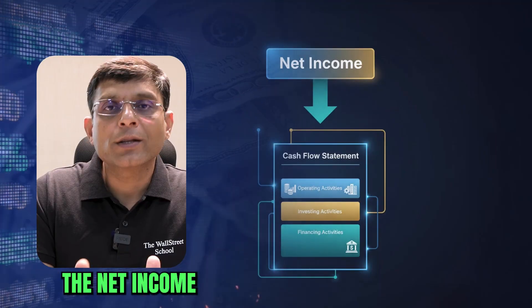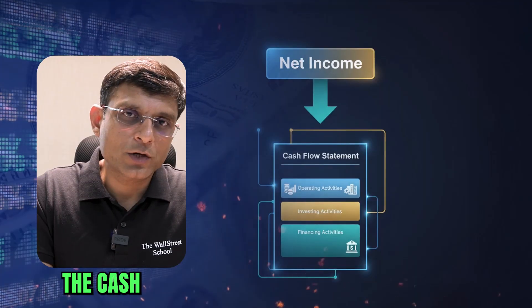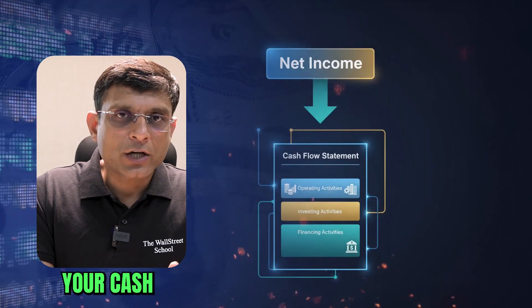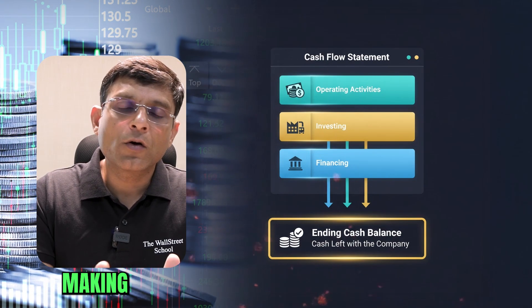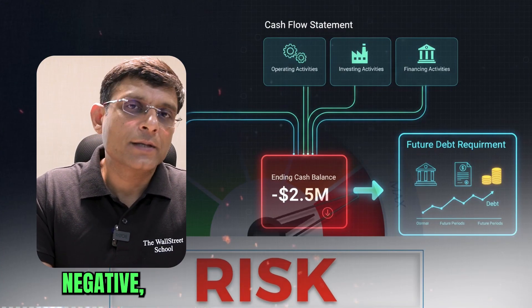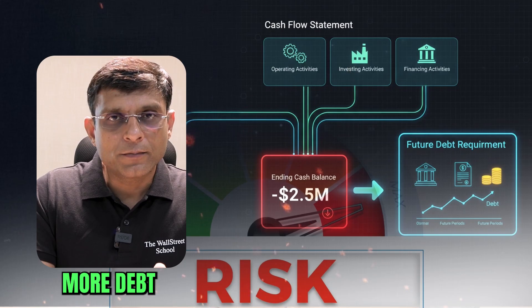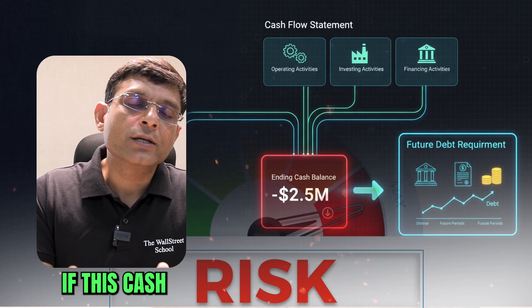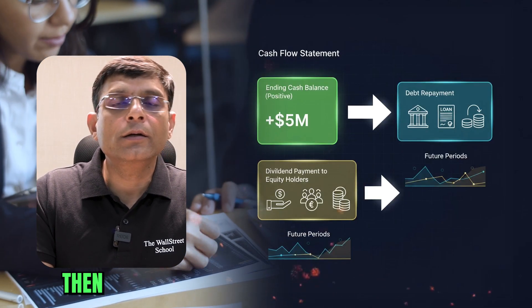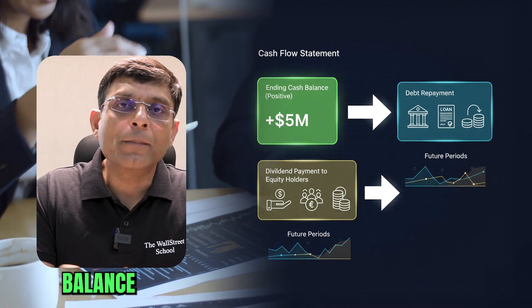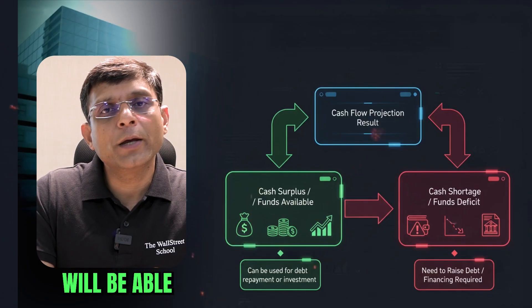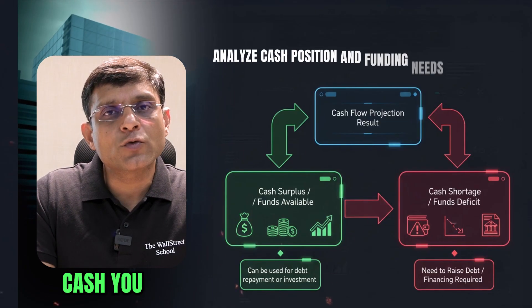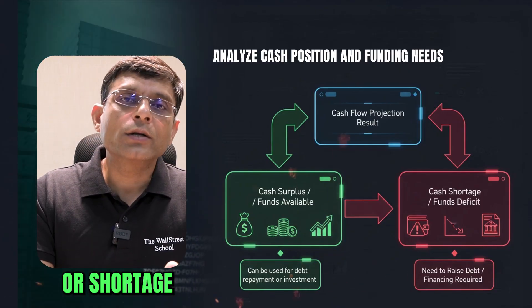In the cash flow statement, net income is your first line item. Complete your cash flow statement and see what cash balance is left after making all payments — expenses, capital expenditures, etc. If this balance is negative, the company will need to raise more debt. If positive, you can use that cash first to repay debt and the remaining amount to pay dividends to equity.